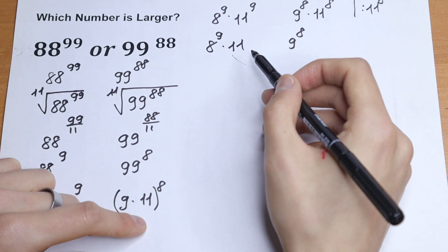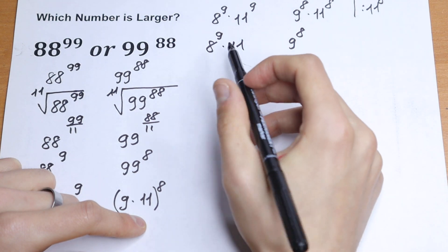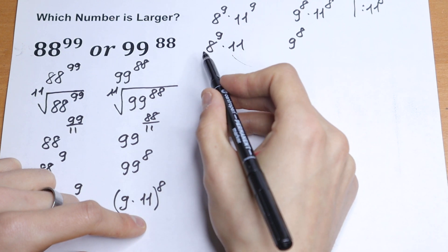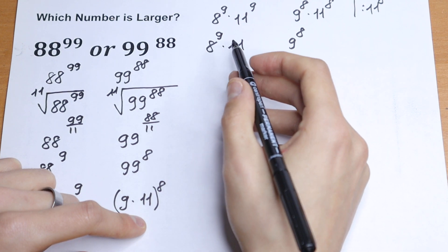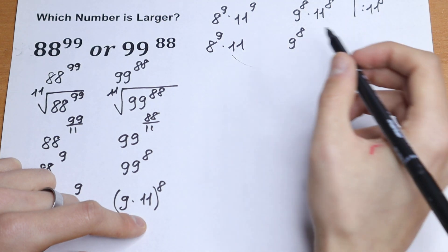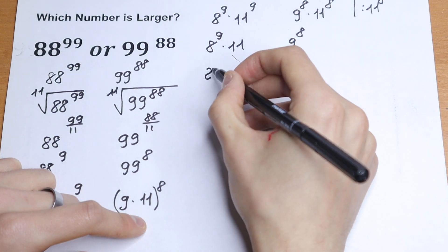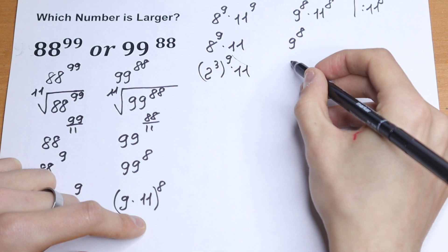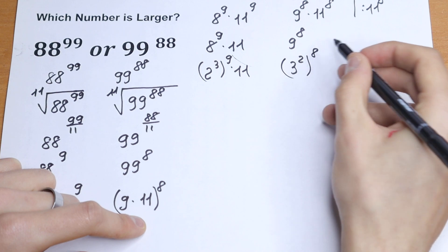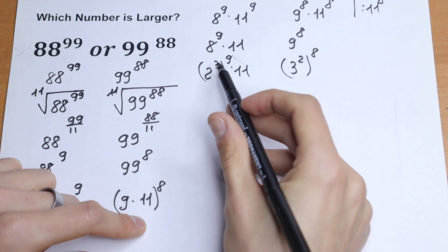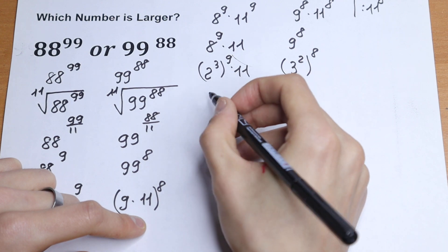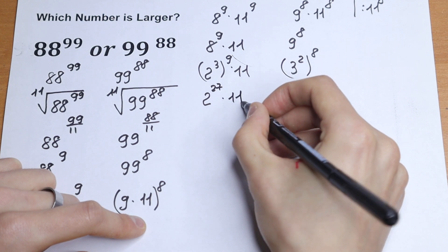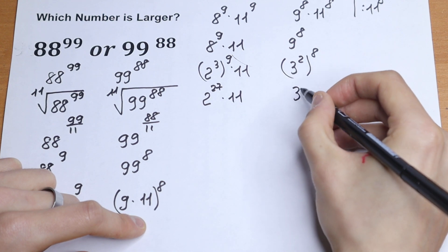Next, we can simplify further. We write 8 as 2 cubed and 9 as 3 squared. So the left side becomes (2³) to the 9th power times 11, and the right side becomes (3²) to the 8th power. Multiplying the powers gives us 2 to the 27th power times 11 on the left, and 3 to the 16th power on the right.